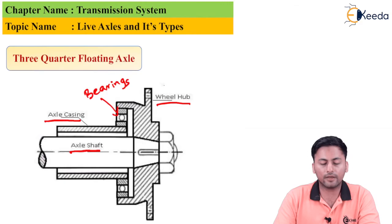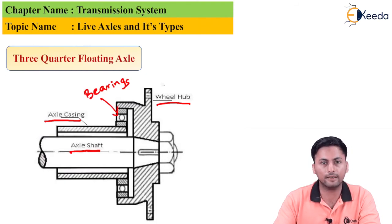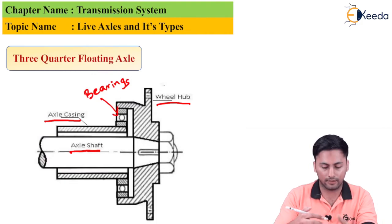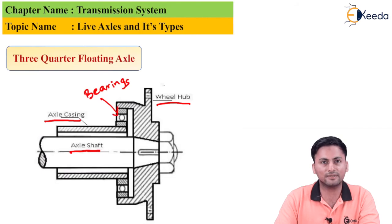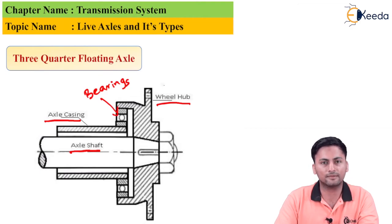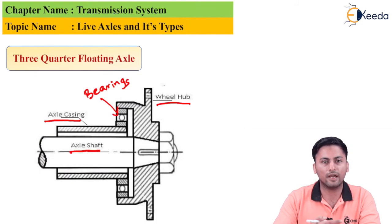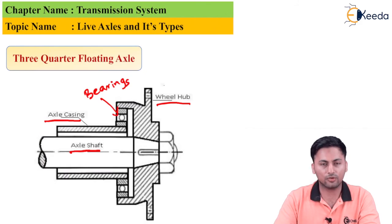In the three-quarter floating axle, the axle shaft rotates and along with it the entire casing assembly rotates. The wheel hub connects the entire assembly together. Because of this arrangement it is considered more robust and reliable. So we have now discussed all three types: the semi-floating axle, the full floating axle, and the three-quarter floating axle, including their advantages, applications, and construction.